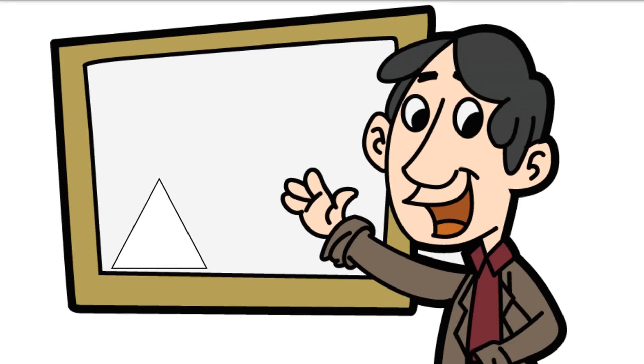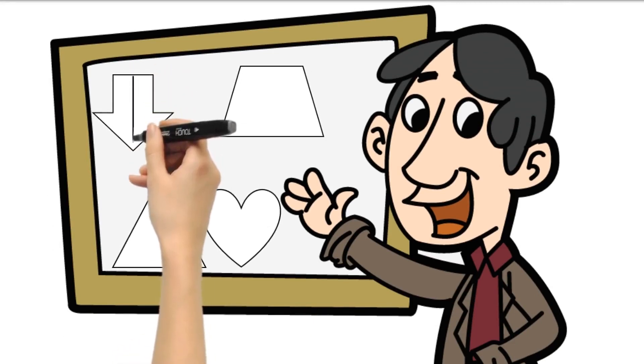All these figures can be divided into half, so that the two halves match exactly, but only vertically.